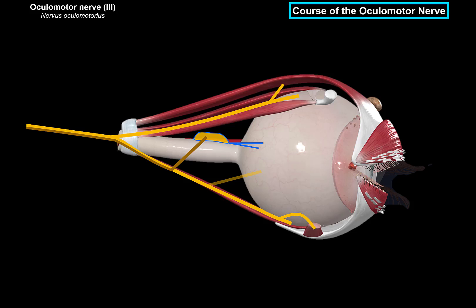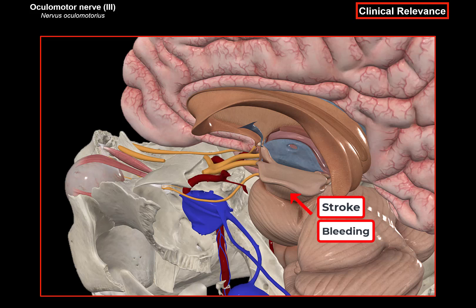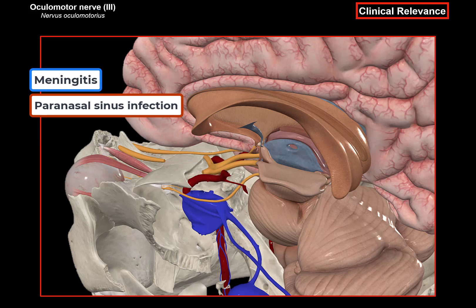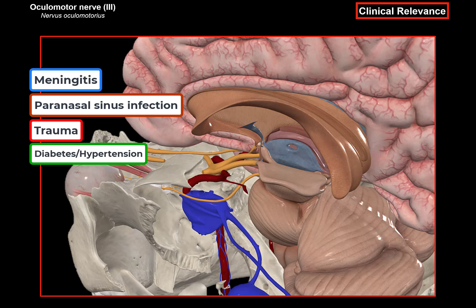Throughout its course from the nuclei in the midbrain to the orbital cavity, the oculomotor nerve has a number of vulnerable points. A stroke or bleeding within the midbrain can damage the oculomotor nuclei. Increased pressure within the cavernous sinus can compress the nerve. An aneurysm of the posterior communicating artery can compress it as well. Meningitis or paranasal sinus infection can spread to the nerve, and trauma to the orbit or superior orbital fissure can cause compression. Uncontrolled diabetes or chronic hypertension can damage the blood vessels around the nerve.